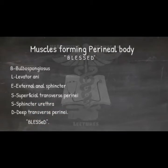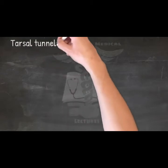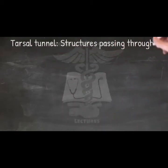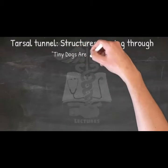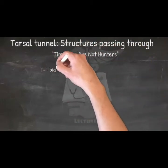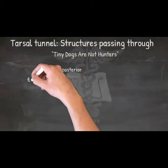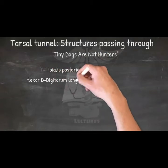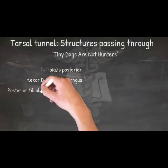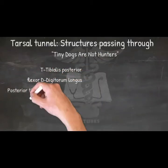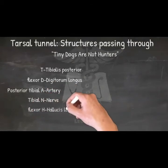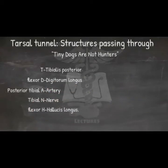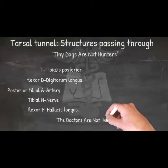Structures passing through the tarsal tunnel — mnemonic: 'Tiny Dogs Are Not Hunters.' Tibialis posterior, flexor Digitorum longus, posterior tibial Artery, tibial Nerve, flexor Hallucis longus. Alternatively: 'Doctors Are Not Here.'